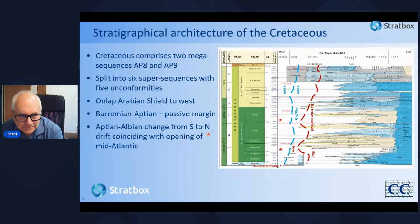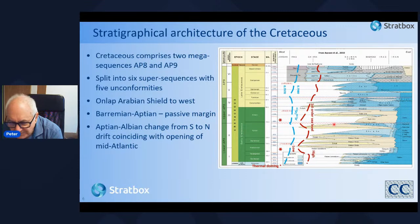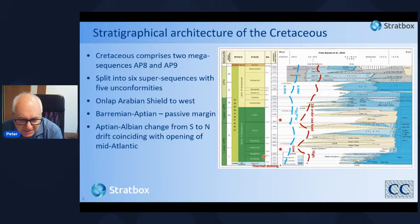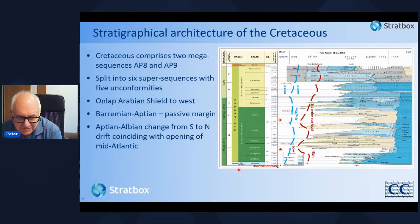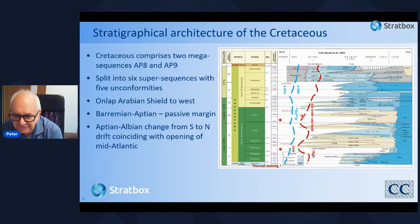The Cretaceous comprises two mega-sequences — the AP8 and AP9 mega-sequences — split into six super-sequences each separated by major unconformities, with thinning and onlap to the Arabian Shield to the west. From the Berremian to the Aptian, AP8 sequences one and two reflect a passive margin setting. These unconformities are marked by tectonic events: either thermal doming of the Arabian Shield or different stages in the opening of the mid-Atlantic causing reorientation of plate movements.